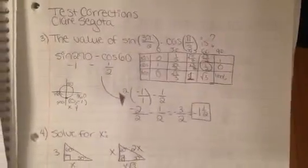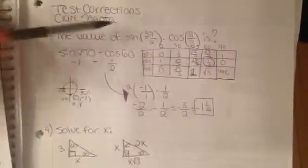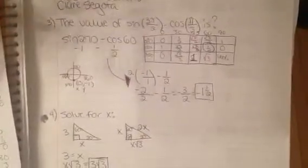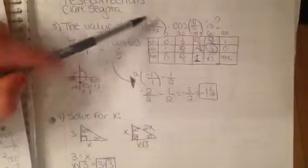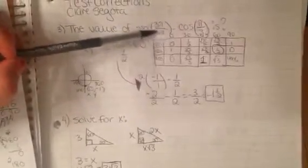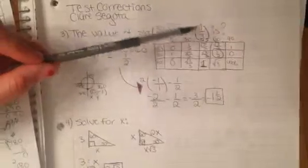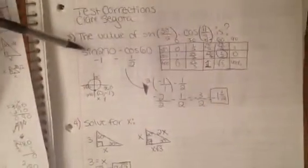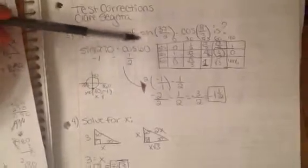Okay, for the first question I got wrong, we have to find the value of sine of 3π over 2 minus cosine of π over 3. It's in radians, so you have to switch it into degrees. You multiply 3 times 180 degrees, because that's what π equals, and then divide it by 2, and you get 270. And then you do the same for cosine. 180 divided by 3 would be 60, so it would be sine of 270 minus cosine of 60.